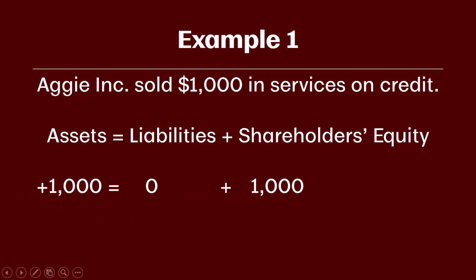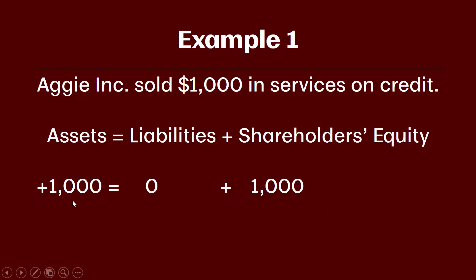Before going to the next example, let's talk about balancing and what that really means. The increase in assets and the increase in shareholders' equity are on opposite sides of this equation, so by increasing both sides by the same amount the equation balances. Each transaction in accounting has two components — there are always two sides. We couldn't just increase revenue; we also have to increase something on the other side of the equation, or decrease liabilities so they offset. We'll look at a few more examples to keep driving this home.